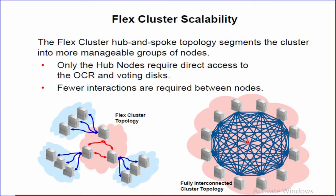In comparison, a 1000-node fully interconnected cluster contains 499,500 interaction paths. As we can see in the diagrams, both examples show 12 nodes each, illustrating the difference in interaction paths between the two topologies.